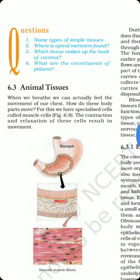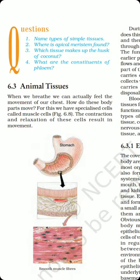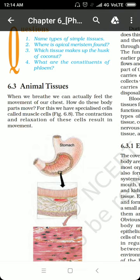Now let us sum up the plant tissues with a quick recall. Plant tissues are made up of cells that have an additional covering beyond the cell membrane — the cell wall. Plant tissues are categorized as meristematic tissues and permanent tissues. Meristematic tissues have an extensive capacity for division and divide actively to show growth in specific regions of a plant.